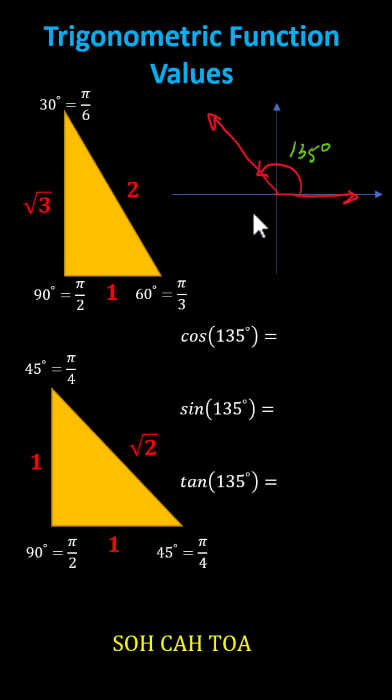And now to sketch the reference triangle, we select any point on the terminal side and sketch a perpendicular segment to the x-axis. This gives us the reference triangle. Notice the reference angle is 45 degrees, which is 180 degrees minus 135 degrees.